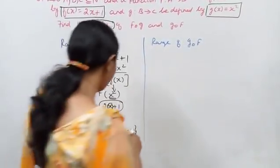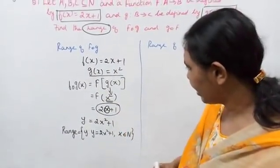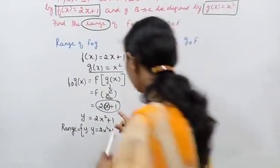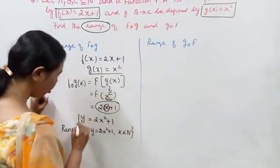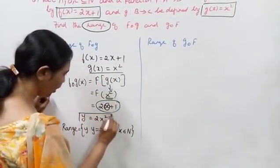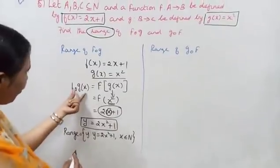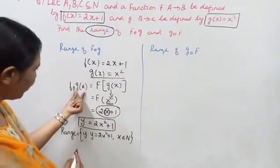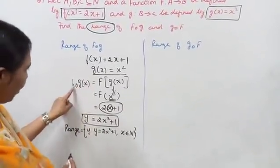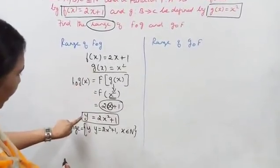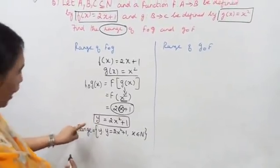Do you understand? If we are going to write the answer, y is equal to 2x square plus 1. That means f of g of x is equal to y. So f of g of x is equal to y, and we are going to write the answer.